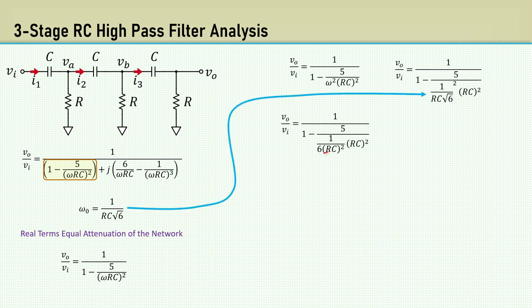Then the resistors and capacitors fall out. After further simplification, we see the attenuation is negative 1 over 29.